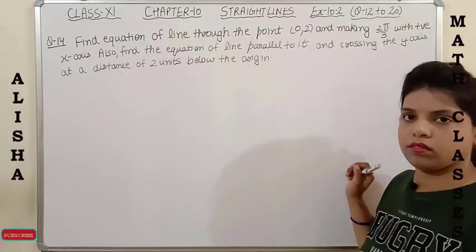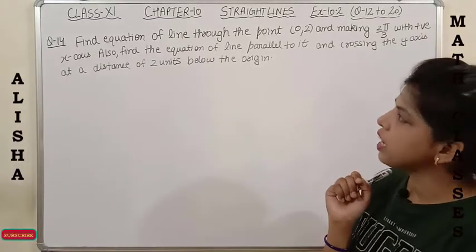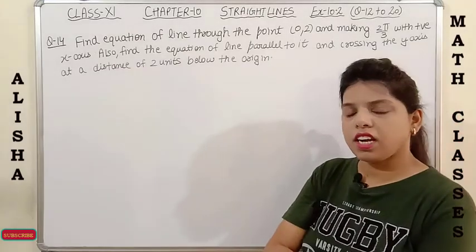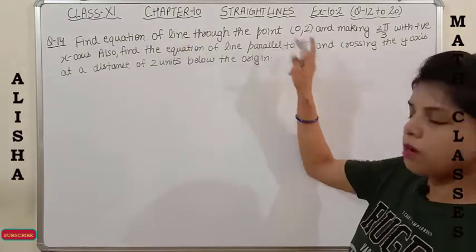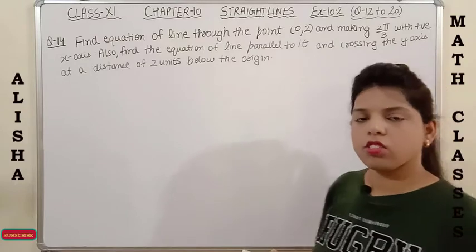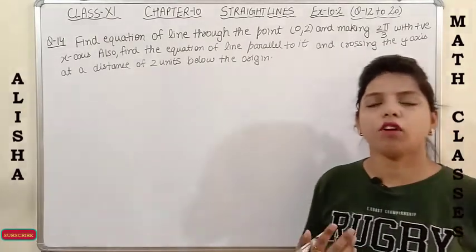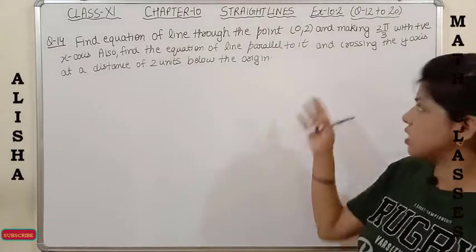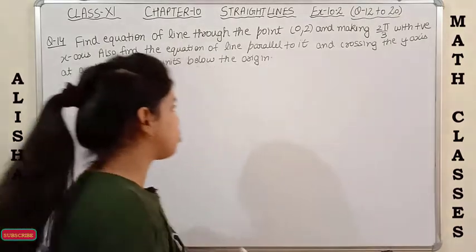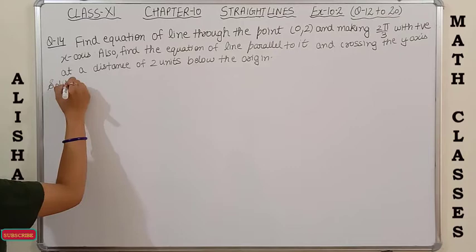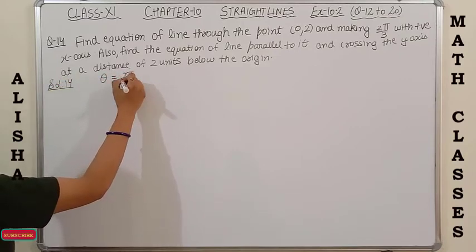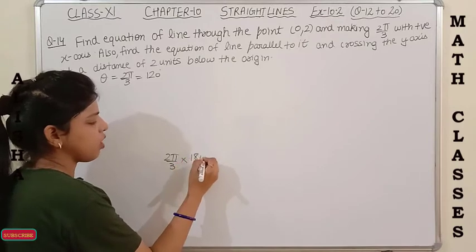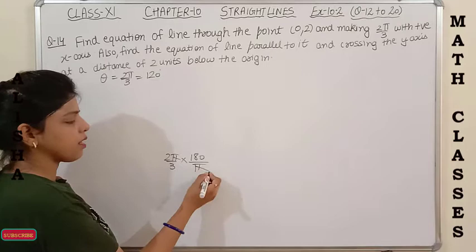Question 14: Find the equation of a line through (0, 2) making angle 2π/3 with the positive x-axis. Since a point and angle are given, we use the point-slope form. The slope m = tan θ, where θ = 2π/3 = 120°.